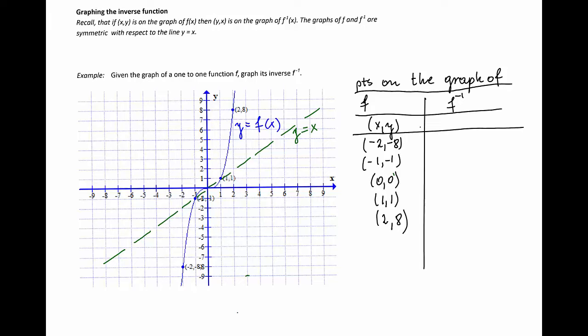So if we look at the example, we have the function f, and we also graph the function y equal x. This is the line that is the line of symmetry between the graphs of function f and f inverse. Let's list the points on the graph of function f.